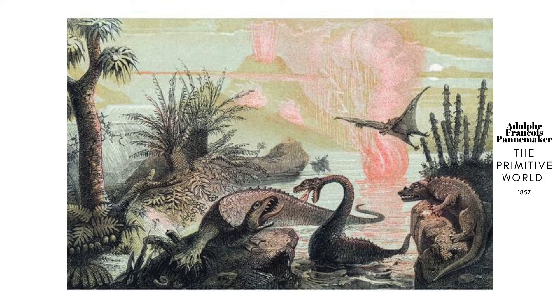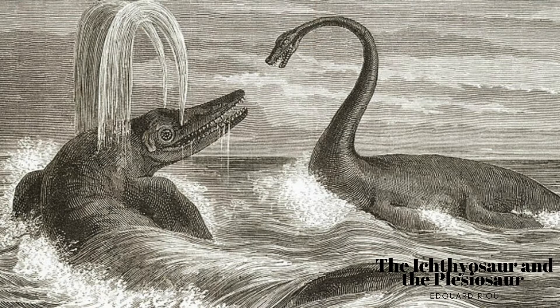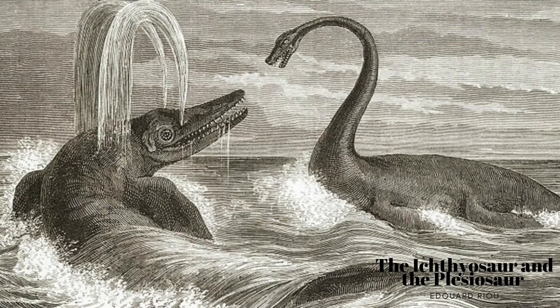The animals depicted in Adolf François Pannemaker's piece The Primitive World in 1857 are heavily influenced by mythological and biblical beliefs. Earth is depicted as fiery and hellish, and many of the animals resemble dragons or other mythological beasts and demons. The work The Ichthyosaur and the Plesiosaur by Edward Rieu depicts these two iconic animals in combat with one another, despite them living in very different times of the Mesozoic era. These reptiles were often depicted as bitter enemies constantly at war on the high seas, serving as perfect allegories for the naval conflicts happening in Europe at the time.